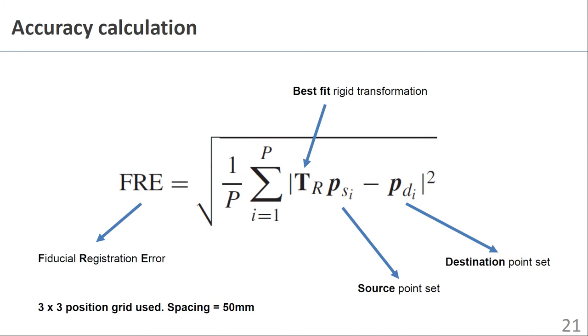Accuracy results were derived using the fiducial registration error, a root-mean-square error approach that measures how well a spatially distributed set of points aligns with an ideal set of corresponding points. In this work, a 3x3 grid of locations on the polycarbonate test board shown previously was used. The error is calculated as the RMS difference between the locations of the ideal grid and the corresponding locations as reported by the magnetic sensor, following a best-fit transformation, capital T.